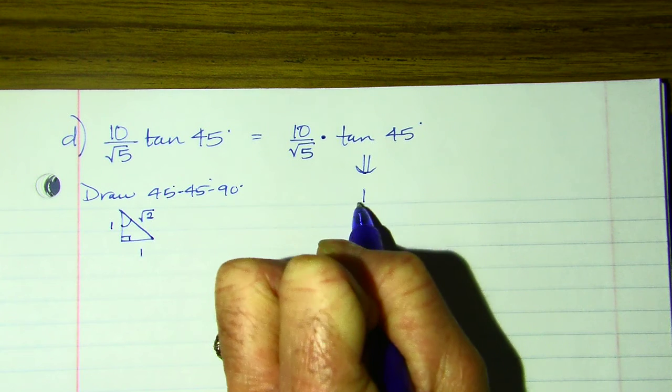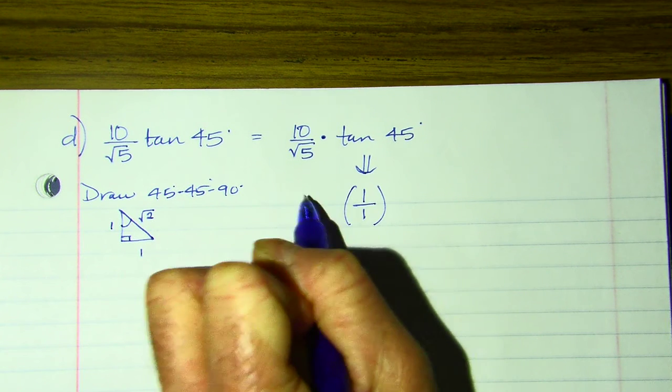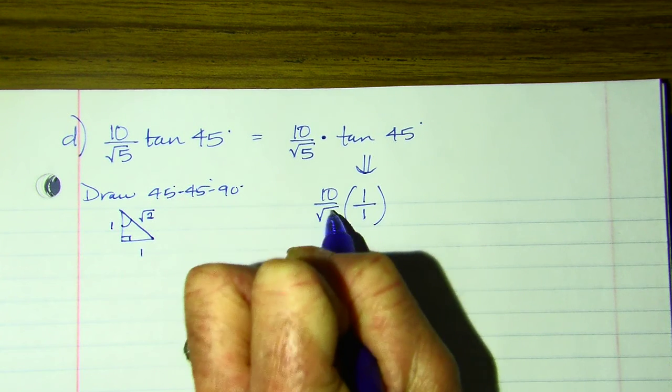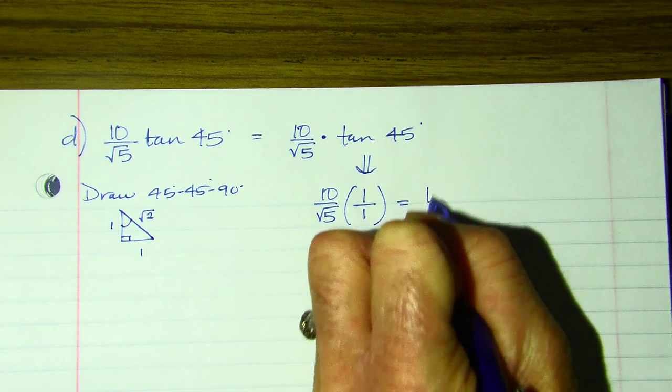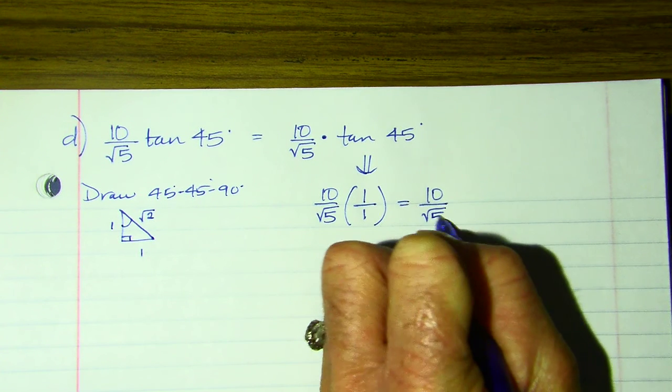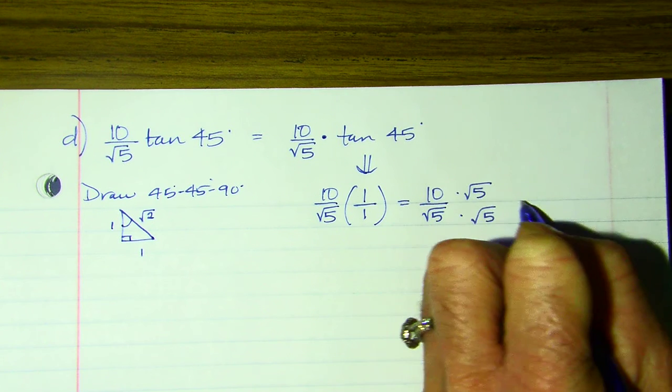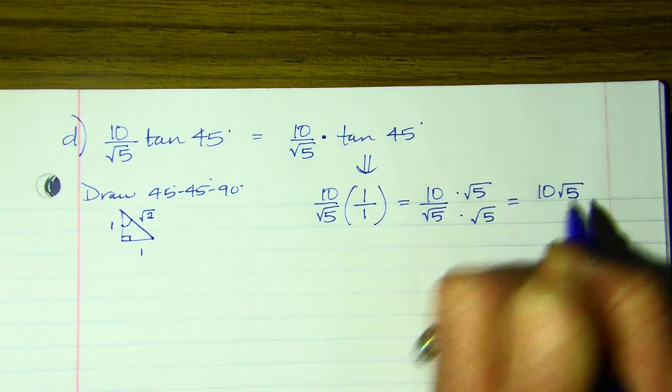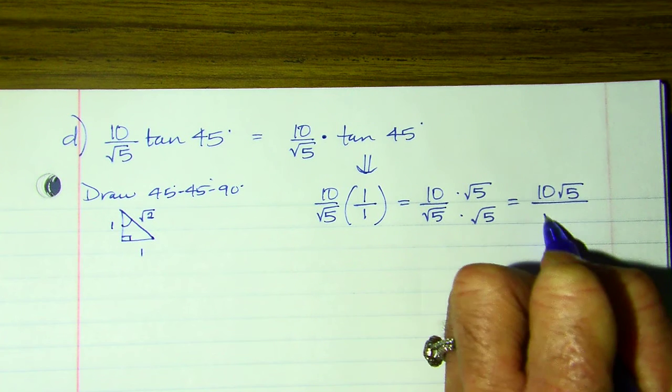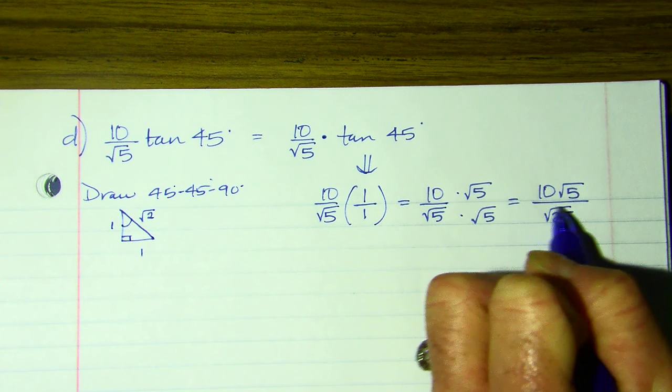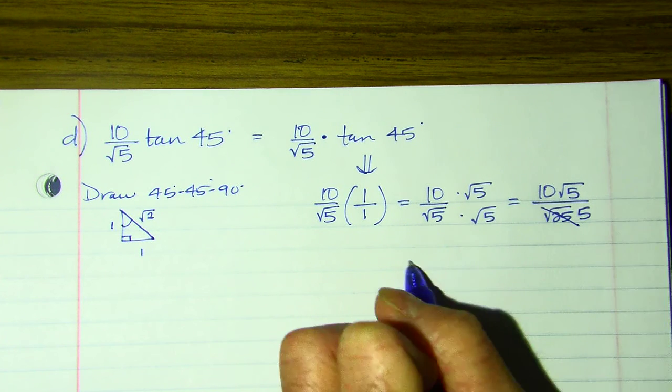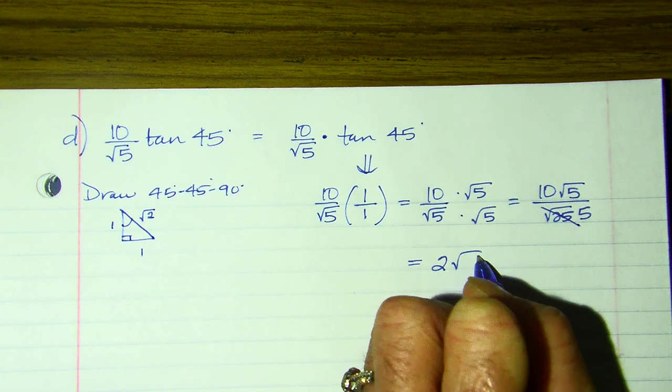So let's say I choose this angle. So this gives me 10 over root 5 times the tangent of 45 degrees. The tangent of 45 degrees is 1 over 1. So I have 10 over root 5 times 1 over 1, which just gives me 10 over root 5. But I can't leave a root 5, but I can't leave a root in my denominator. So I get 10 root 5. 5 times 5 is the square root of 25, which is 5. So my answer is 2 root 5.